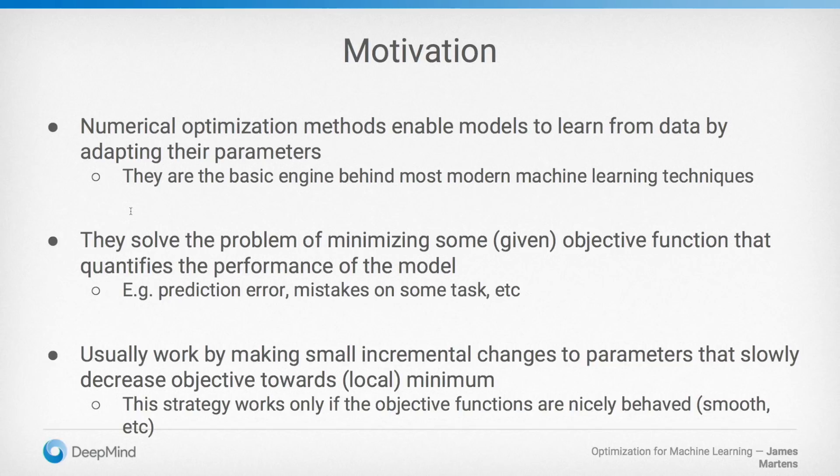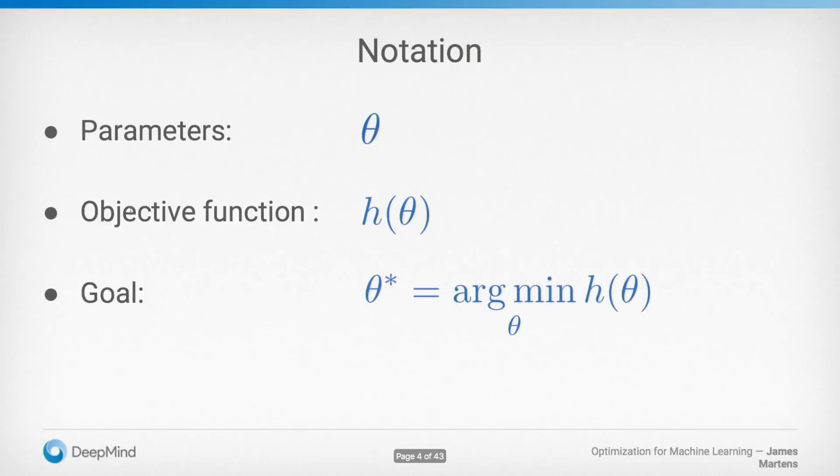Some notation that will carry through the lecture: I'm going to denote by theta the parameters of the model — these are the quantities we're optimizing, that we're adapting. The objective function will be denoted by h, and our goal is always going to be minimization of h with respect to theta.